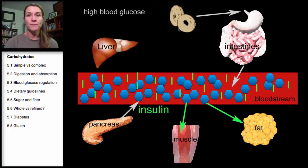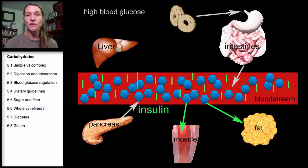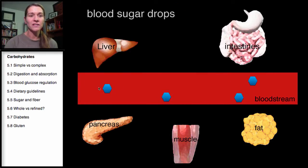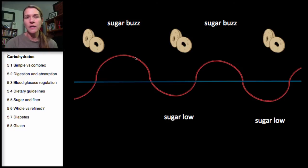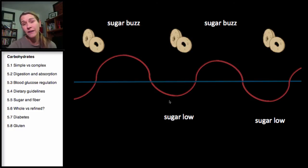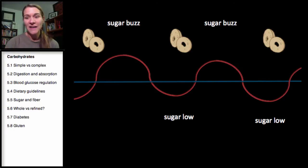So with the bagel: starch goes to glucose chains, to maltose, to glucose — a high spike in blood sugar, then a spike of insulin. The insulin works and drives the glucose out of the bloodstream, leaving you with very little sugar. What does that do? It makes you tired and hungry. So you eat the bagel again, feel that sugar buzz for a little while, and then again you have that sugar low. You eat the bagel again, feel good again, and then again that sugar low.